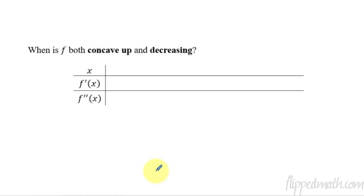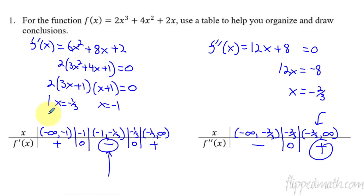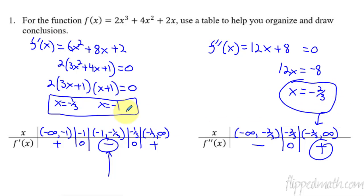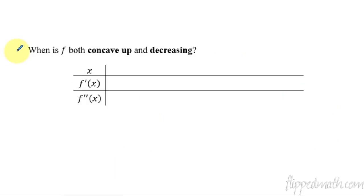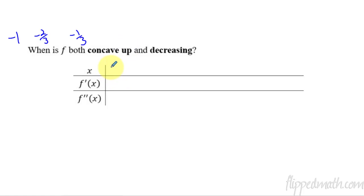There will be times where you need to put everything together in one place. You take all of your critical points from the first derivative and your possible point of inflection from the second derivative. So we had negative one, negative two thirds for the possible point of inflection, and negative one third. We're going to take all three of these and create a chart with all of them. We're going to go from negative infinity up to negative one.